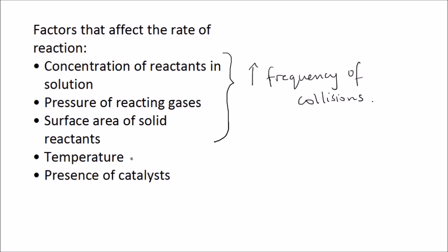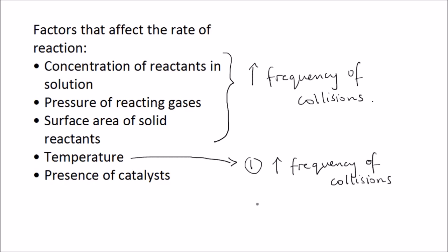If we look at temperature, increasing the temperature does two things. First, it increases the frequency of collisions, and secondly, it increases the energy of the particles. Thinking back to collision theory, you can increase the rate of reaction by increasing the number of collisions or by increasing the energy of the reacting particles — and increasing the temperature does both. If you increase the temperature of a substance, the particles will gain kinetic energy and move around faster, so they are not only moving with more energy but are also more likely to collide.